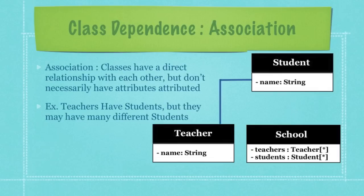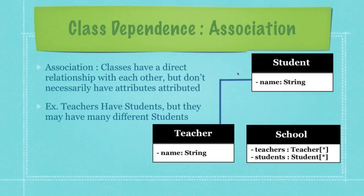Moving on to association — also not often shown in class diagrams, but worth knowing. If classes have a direct relationship but don't necessarily have attributes tied to each other, that's an association dependency. For example, teacher classes and student classes are directly related — teachers wouldn't be teachers without students — but they are not directly dependent on each other. They are connected inside of another class, such as school. This is known as an association relationship.